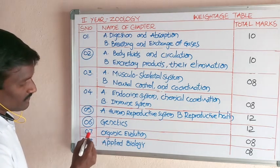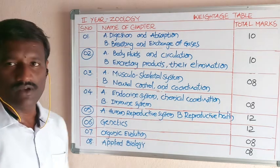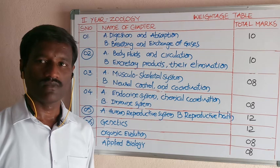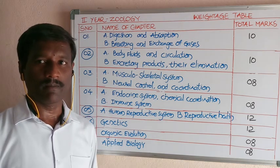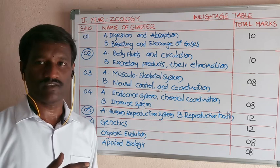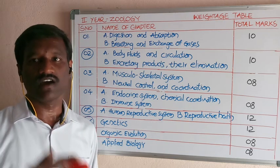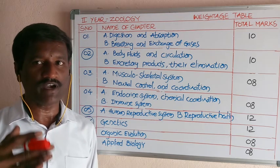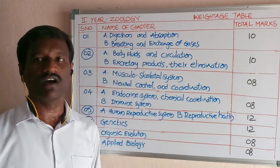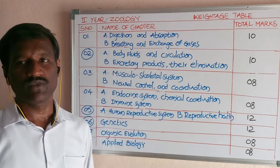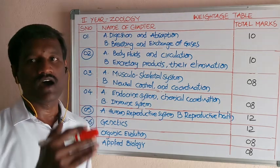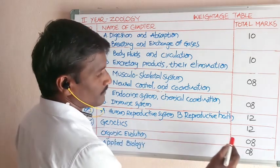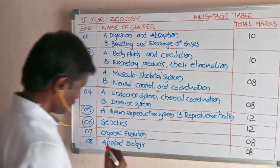The seventh chapter is organic evolution. Organic evolution deals with different types of variations in living organisms, the different types of genetic adaptations in living organisms to their environment, and also the origin of life. The weightage of the seventh chapter is 8 marks.